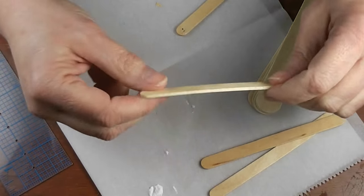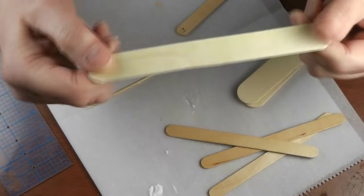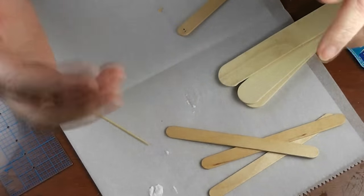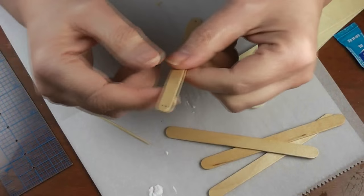So we're starting out with basic supplies. We need some regular craft sticks, some thick jumbo craft sticks, a toothpick, glue, something to cut your wood with, and a way to make a hole or a couple of holes.